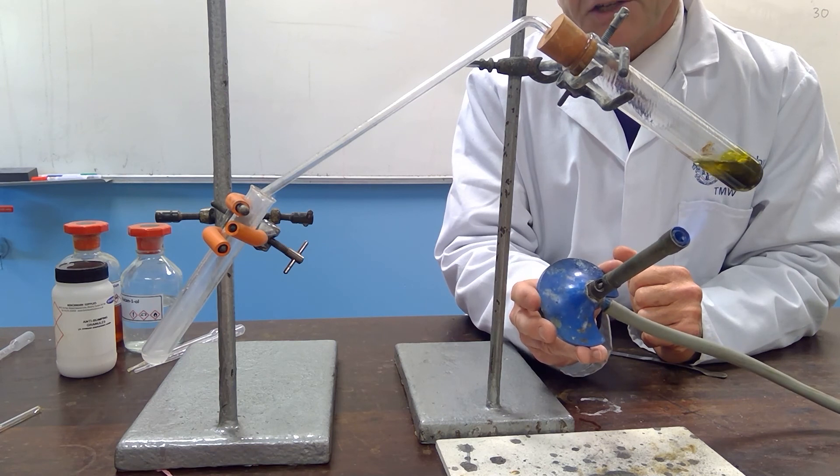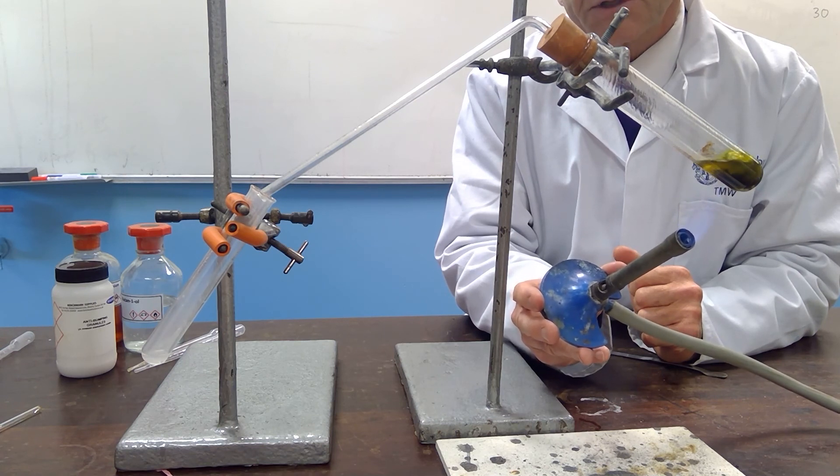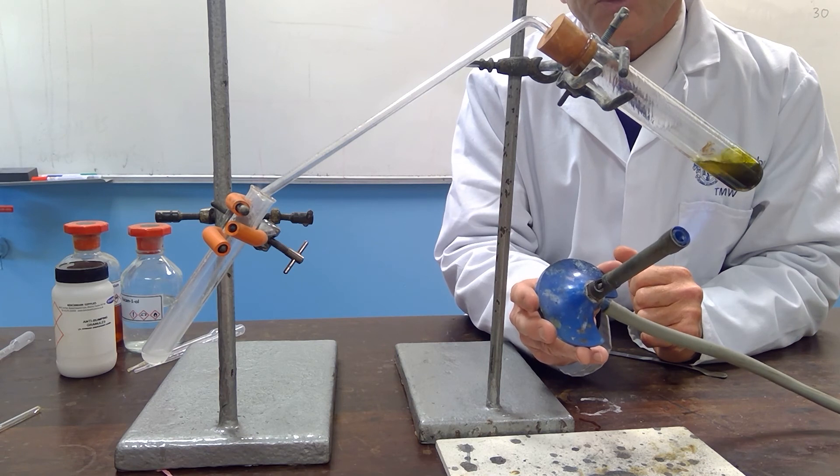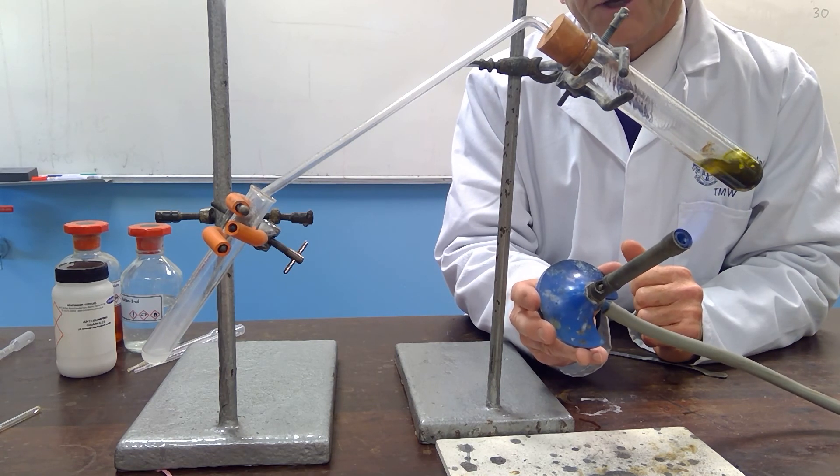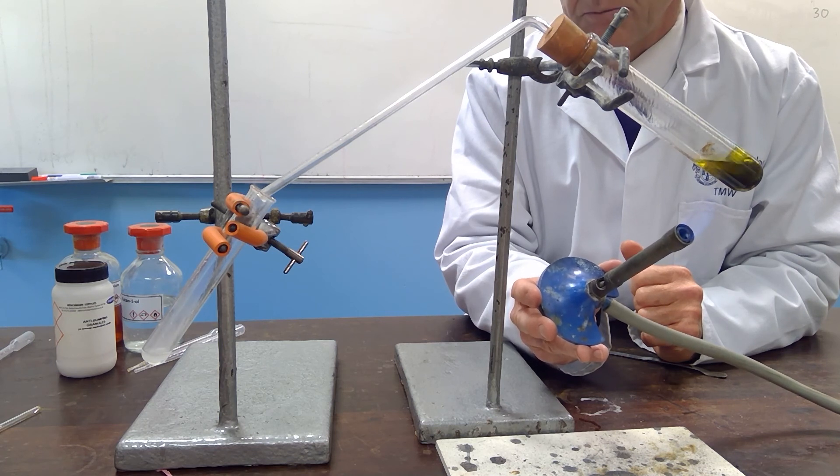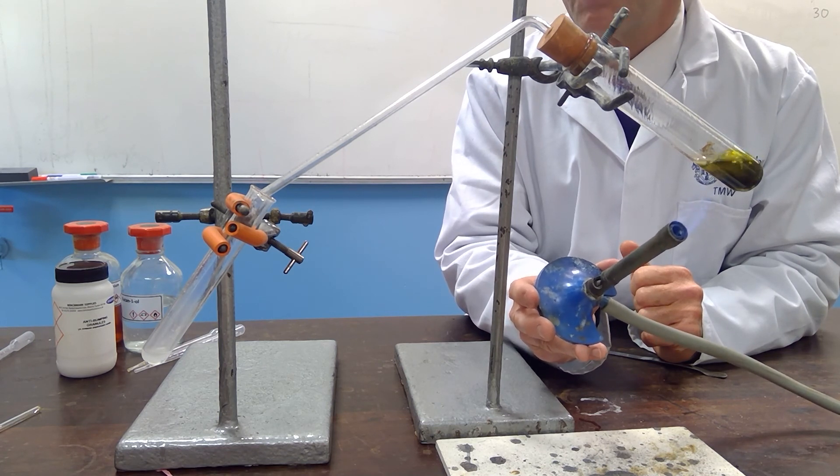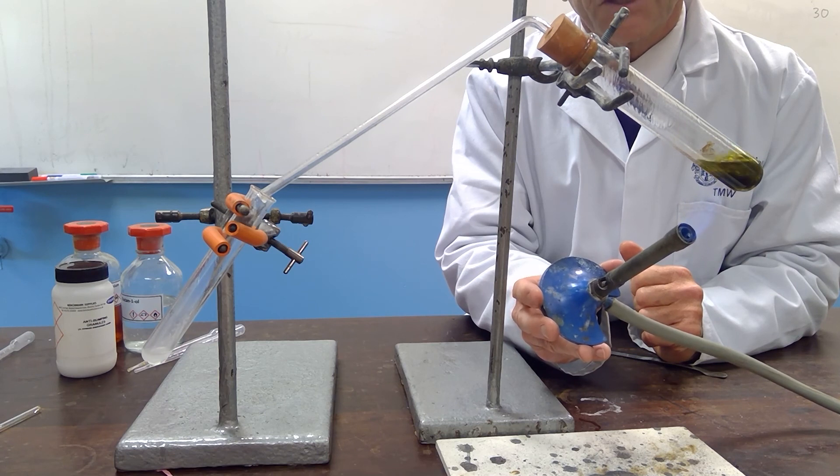What I will do in the next video is that I will take this distillate, and I will also distill the butan-2-ol combination with the acidified dichromate, and I will take that distillate, and we will do some further tests on those in the next video.